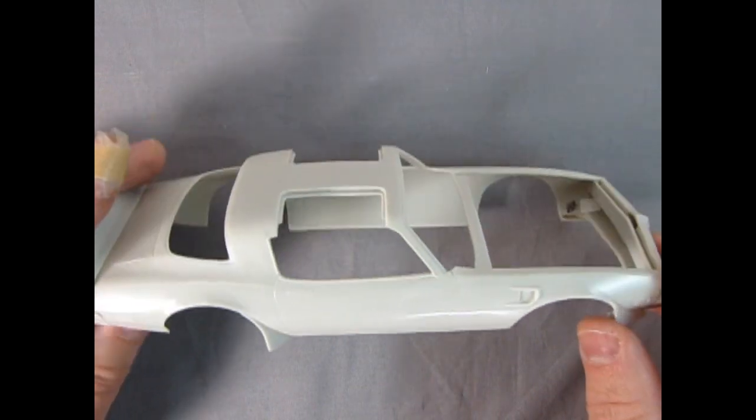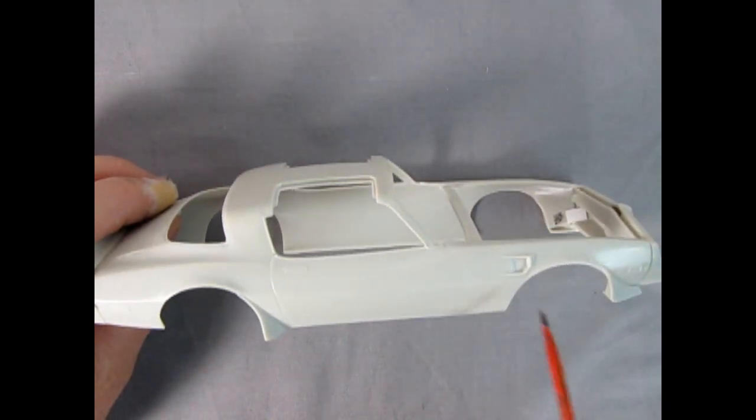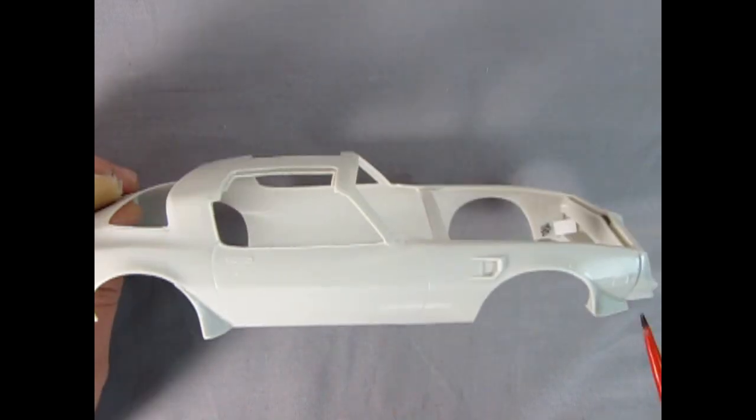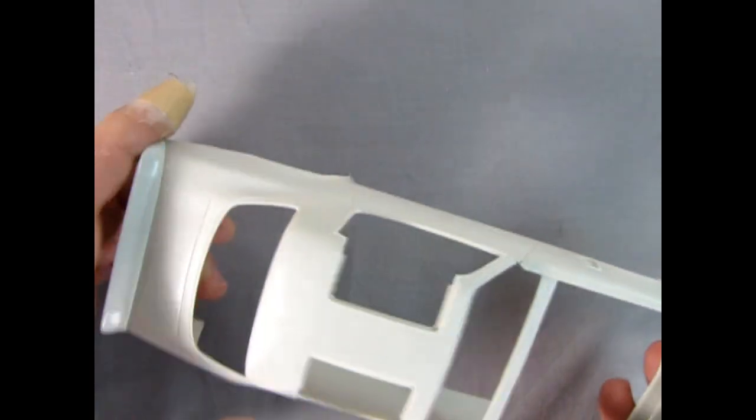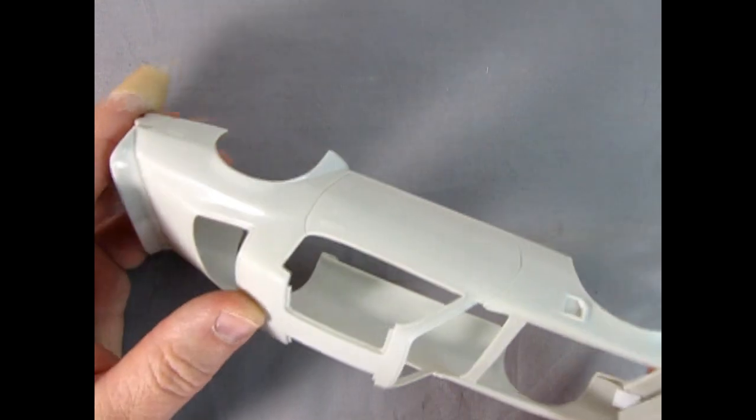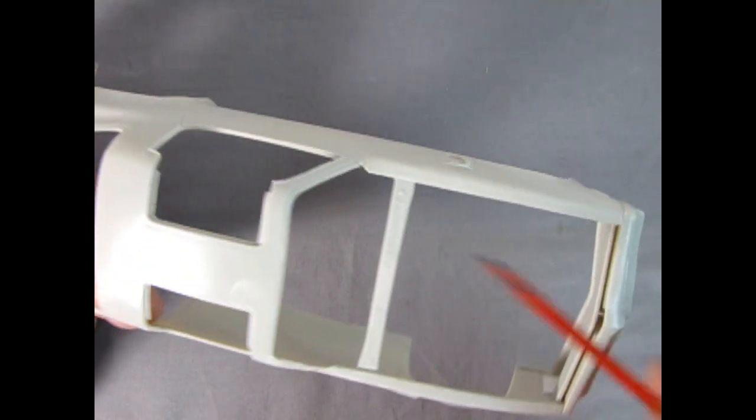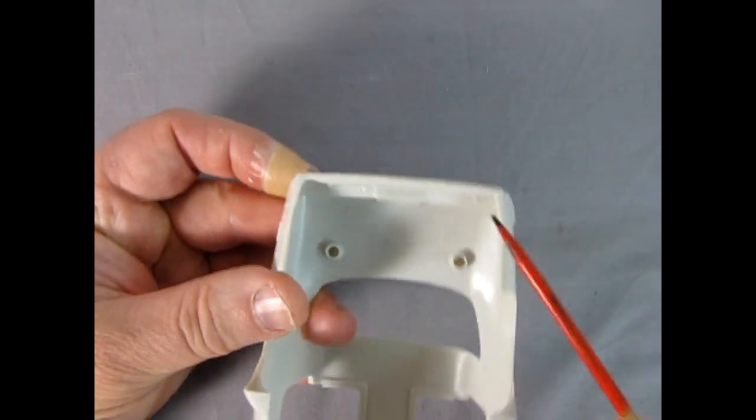Here we have our Trans Am body and there are a lot of components on here that are molded in nicely like the little side scoop, the door handles, the side marker lights and of course our t-tops with a little ridge around them so the t-tops don't fall through. There's some nice grill detail on this brace as well.